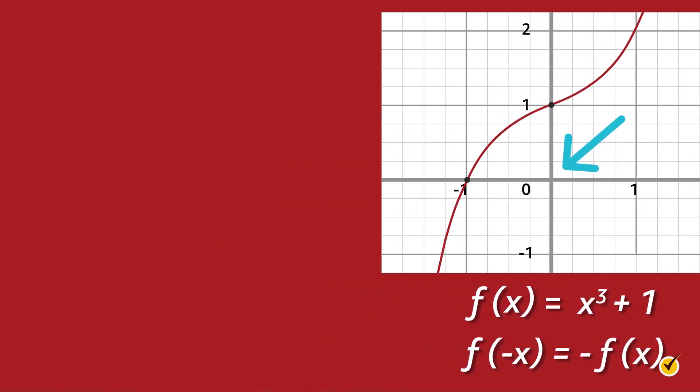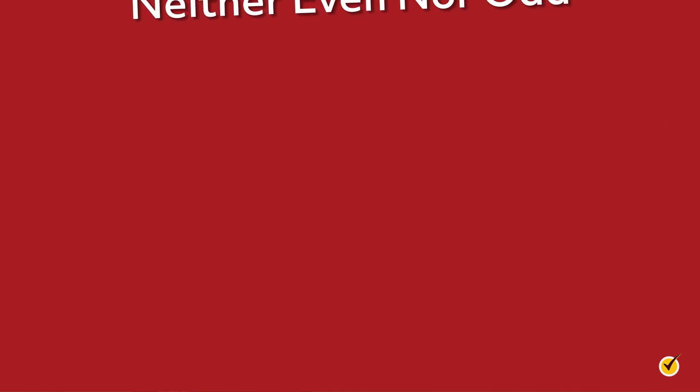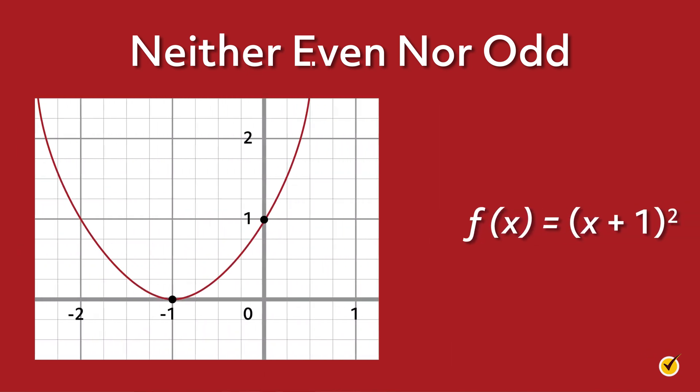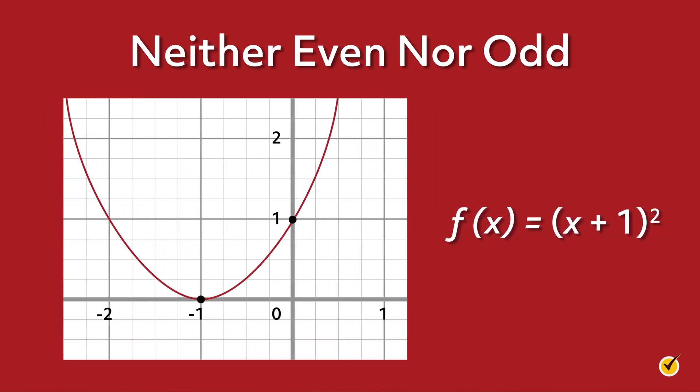So we have now talked about the definitions of both even and odd functions. But before we go further, it's important to clarify that some functions may be neither even nor odd. For example, take a look at the function f equals (x + 1) squared. From the graph, we can see that this function doesn't pass through the origin, so it can't be odd, and it isn't symmetric about the y-axis, so it isn't even either.